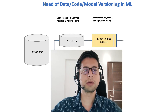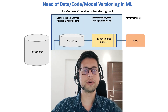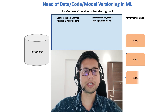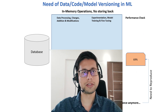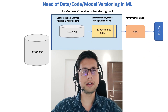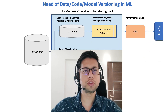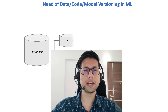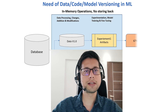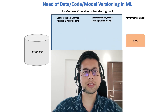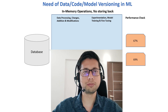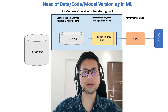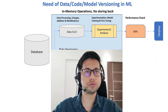Hello everyone. Today we'll be talking about different kinds of versioning in the machine learning world. In software development we mainly do code versioning, but in ML we need to do data versioning as well as model versioning, along with code versioning. Let's understand the need for data versioning, and then we'll look at what tools we use for data versioning and model versioning.